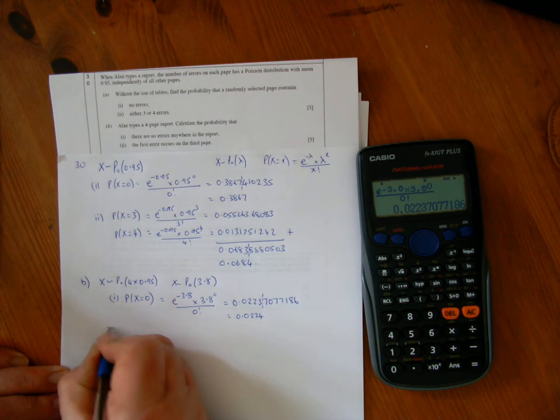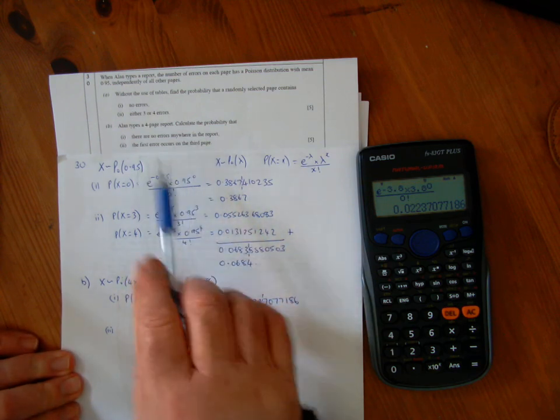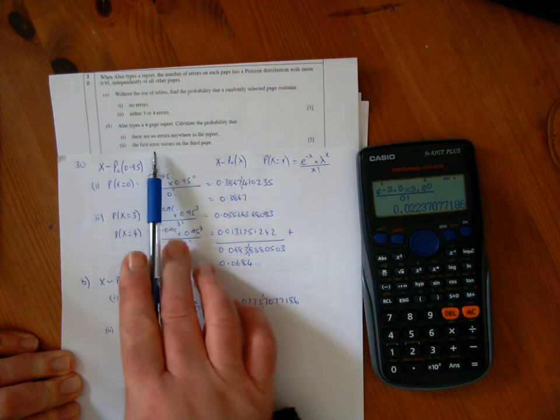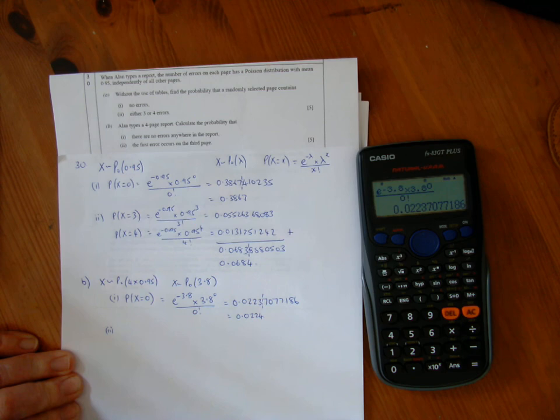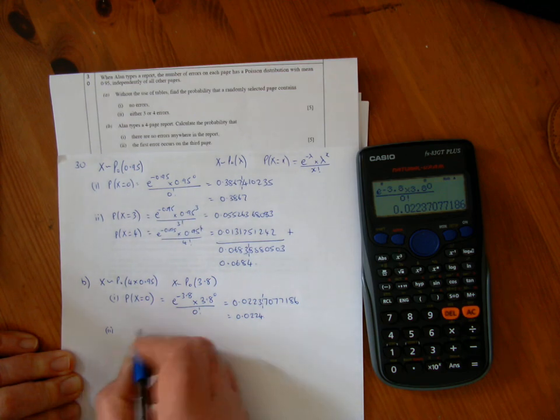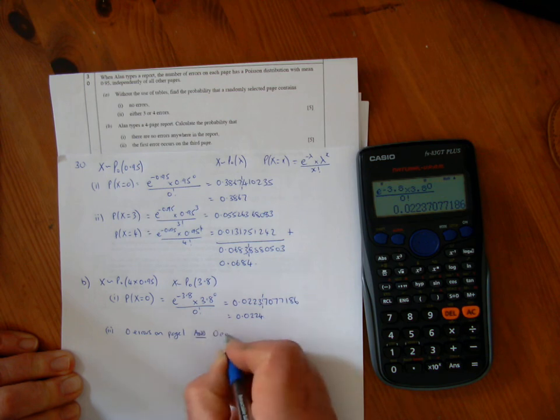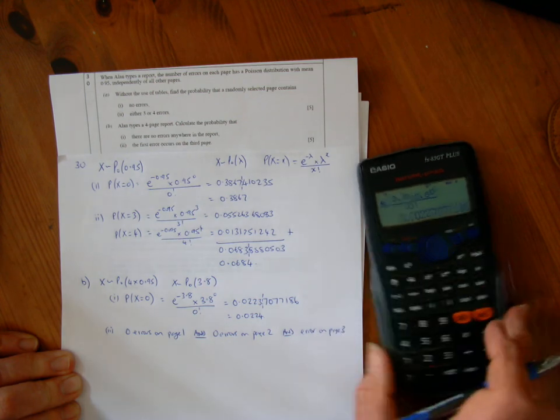Second part: the first error occurs on the third page. We want an error on the third page—could be one error, two errors, any number of errors—but occurring on the third page. For that to occur, we need no errors on the first page, no errors on the second page, and an error on the third page.